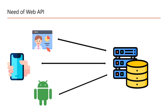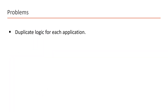So the website will communicate with the database, the iOS application will communicate with the database, and similarly this Android application will also communicate with the database. If all these applications are interacting with the database directly, then we will have some problems. Let's understand that.